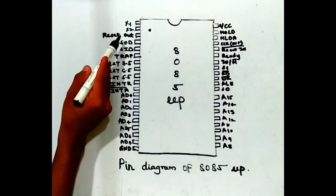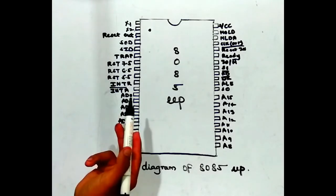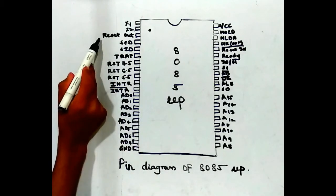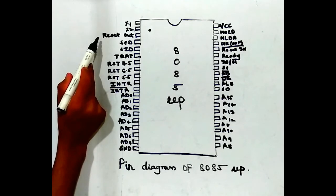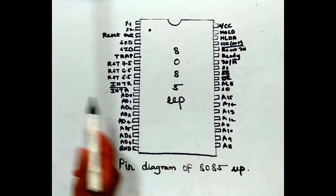The first and second pins are X1 and X2. These are clock input signals connected to a crystal, LC, or RC circuit. The third pin is reset out. This is an active high output signal used to reset other devices in the system.